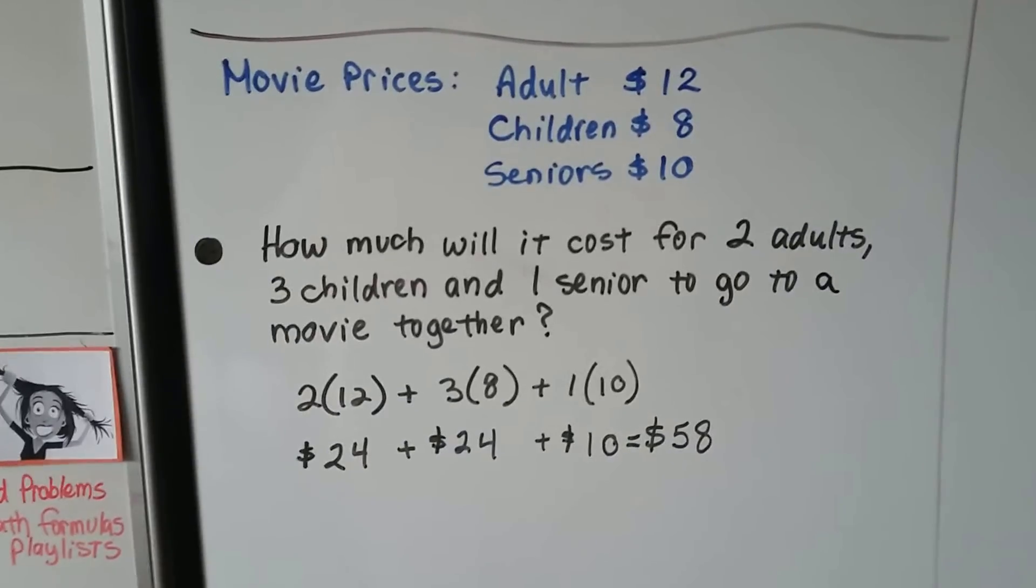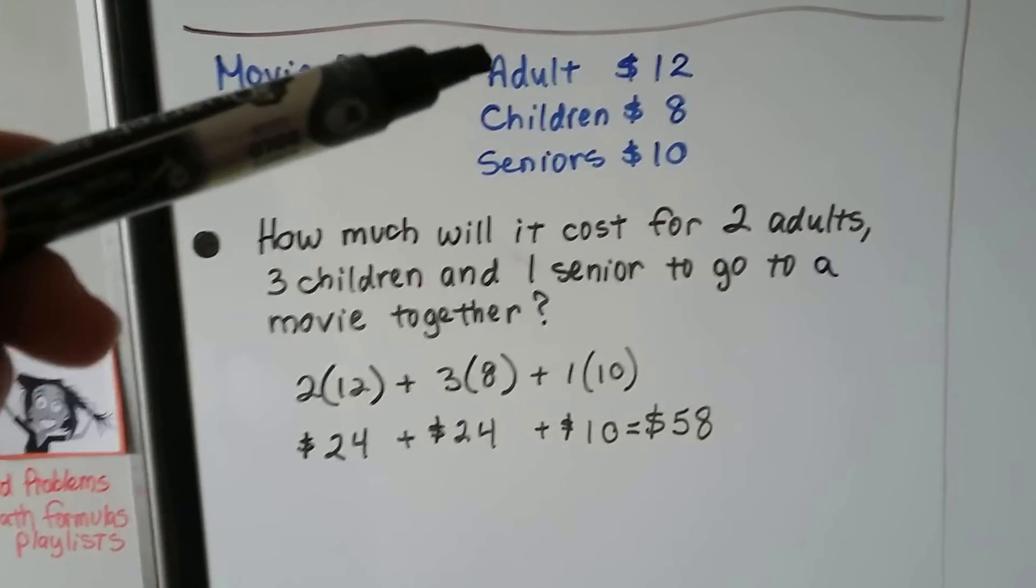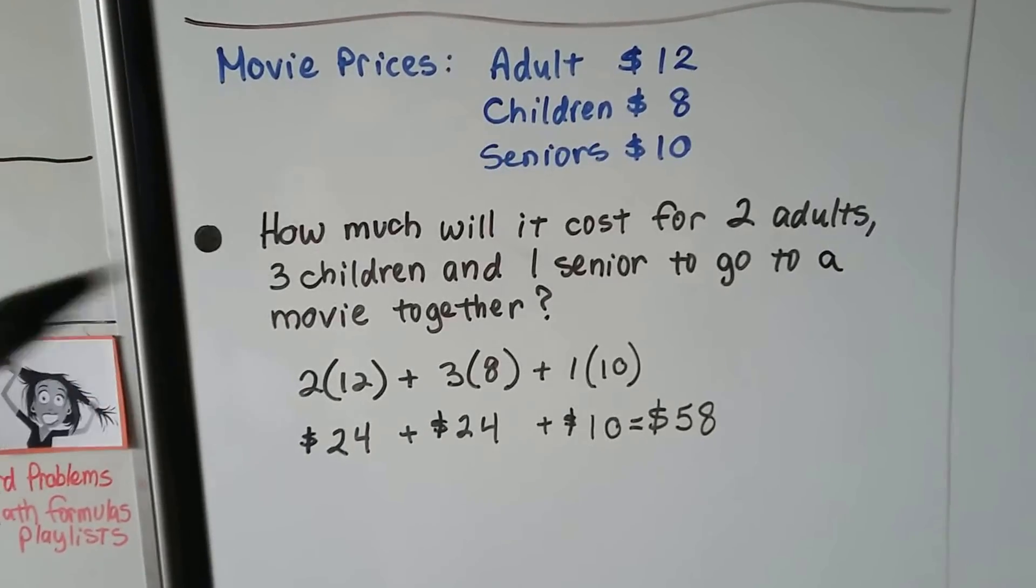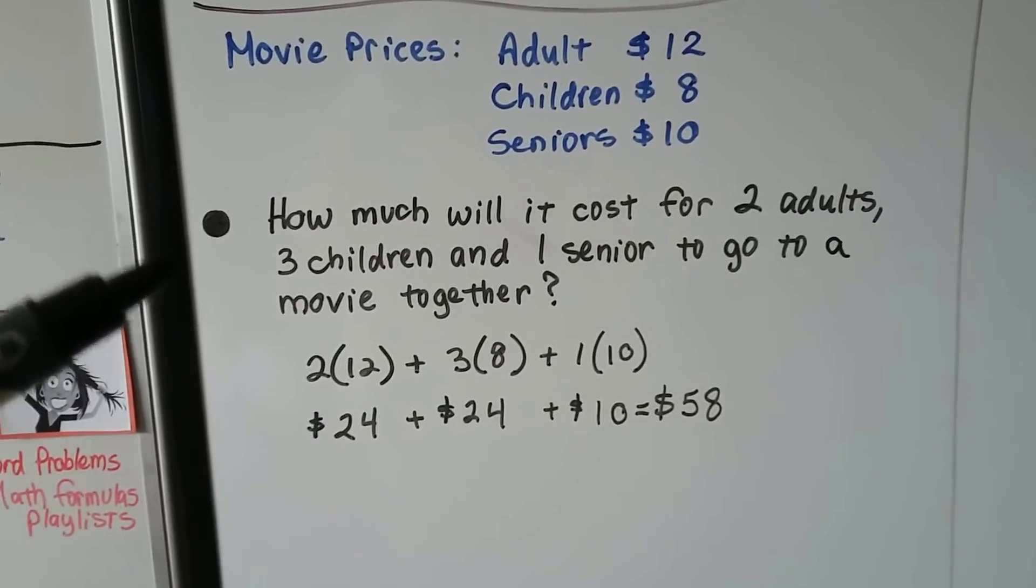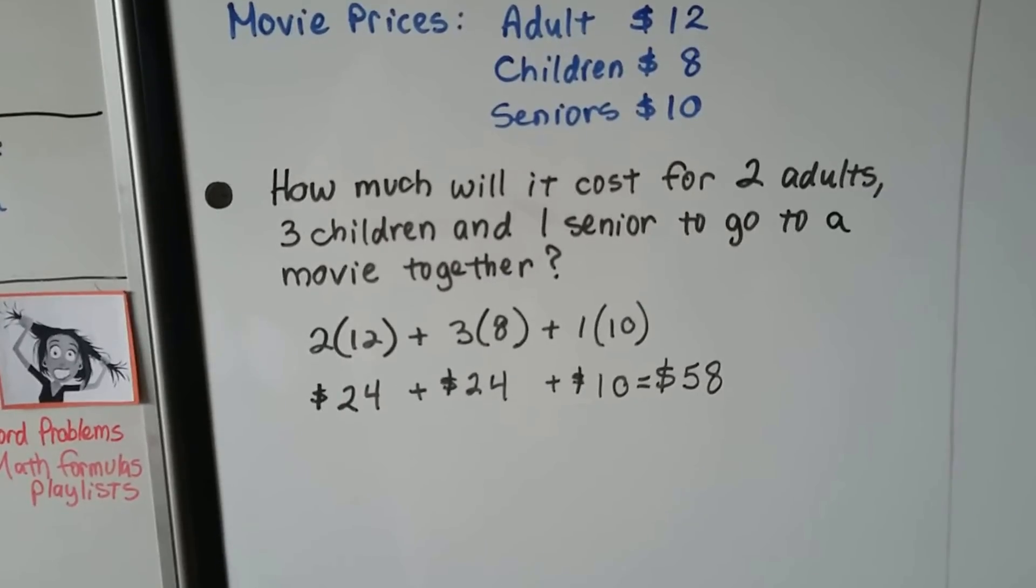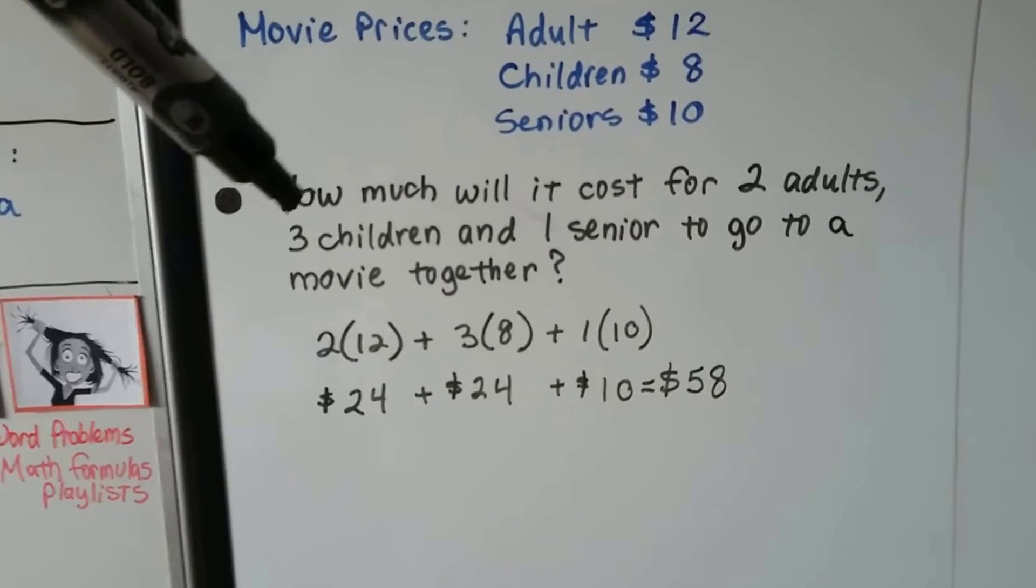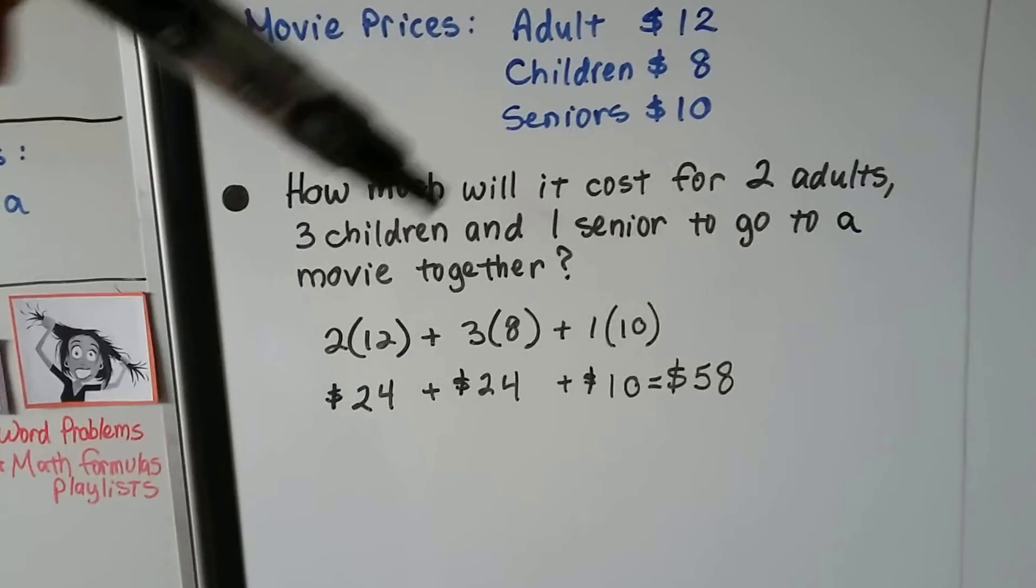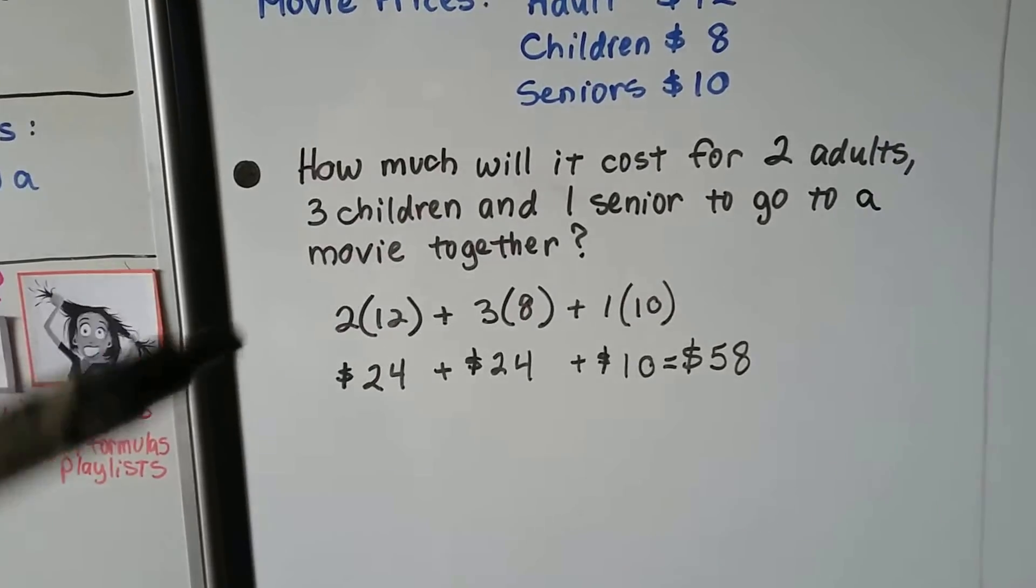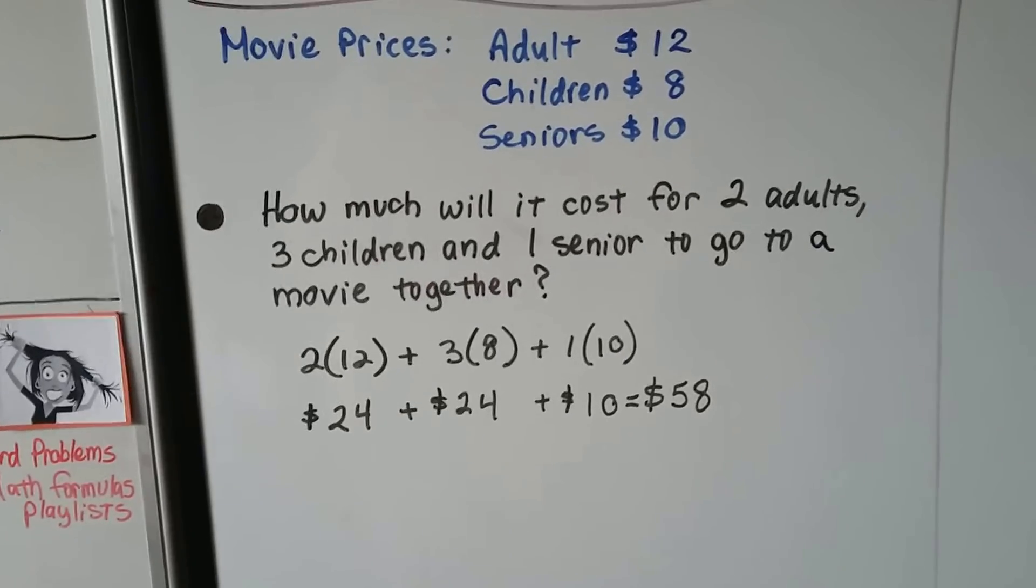You might see problems like this. It'll give you a chart. So here's some movie prices. Adults are $12. Children are $8. Seniors are $10. And it'll ask you, how much will it cost for two adults, three children, and one senior to go to a movie together? Well, two adults, two times twelve. Three children, three times eight. One senior, one times ten. We add them all up together and get $58 for the family to go to the movie.